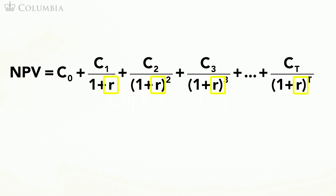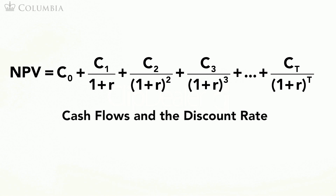To find the NPV of a project, you therefore need these two inputs: the cash flows and the discount rate. For example, let's imagine a firm is considering investing in a new plant. The cash flows would be the investment in the building, machinery, and other equipment in the first few years, as well as the revenues and cost of production once the plant is in operation.